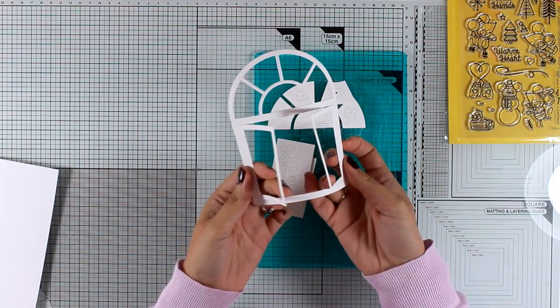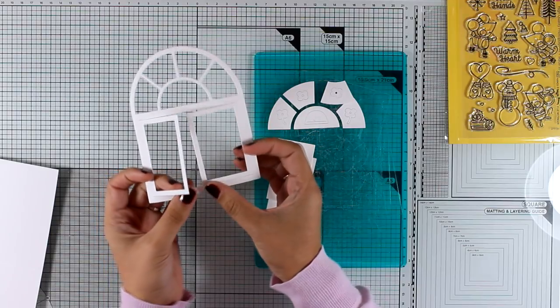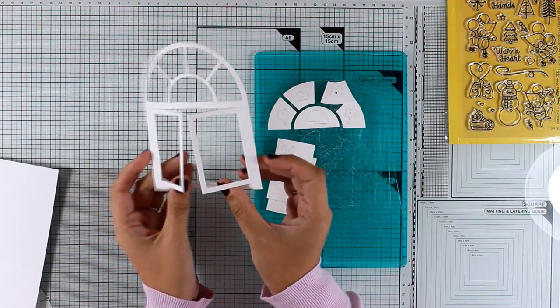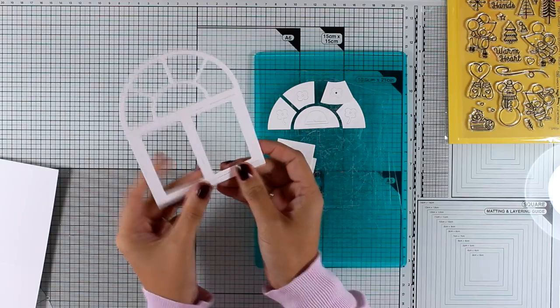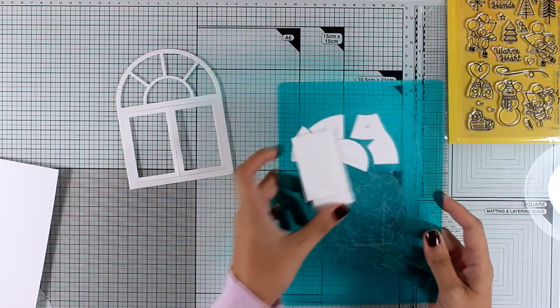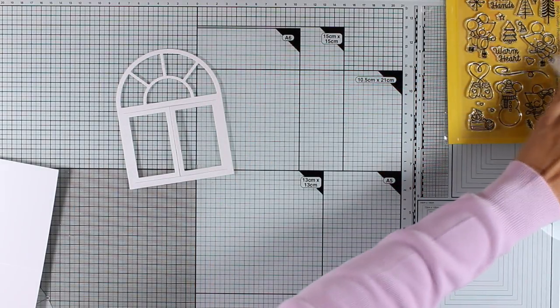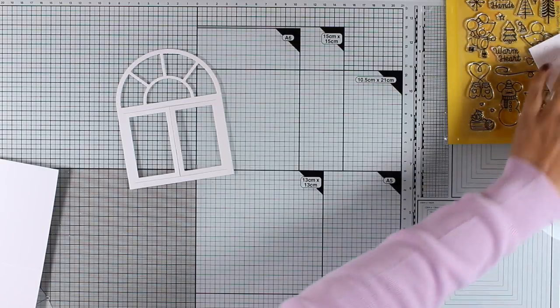I just love that you can open up the windows. Also, the die gives you a folding line for the windows that you can crease if you wish with your bone folder, but I decided not to do that as I want my windows to open up all the time. Before I go on with my card, I wanted to show you a couple of products that have been released along with this window that could make a perfect card.